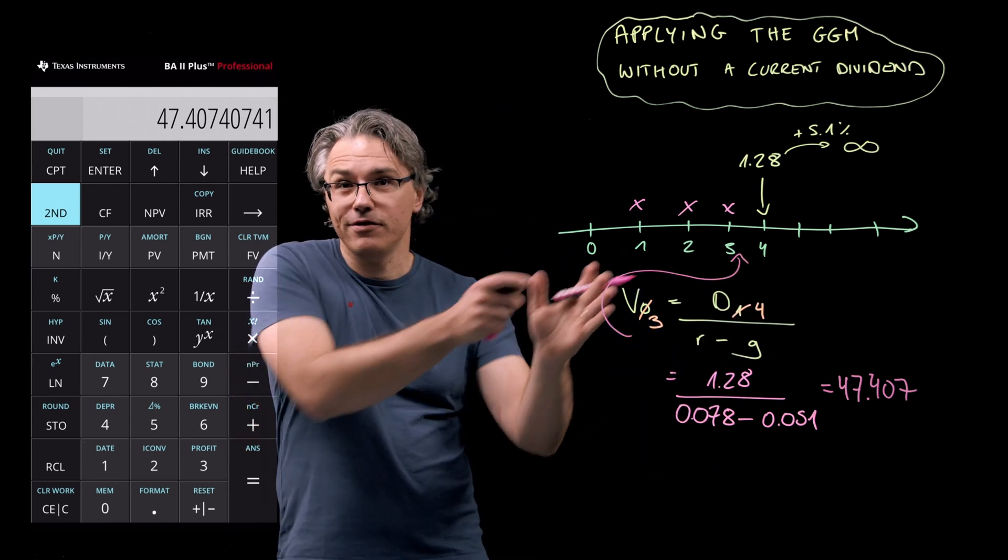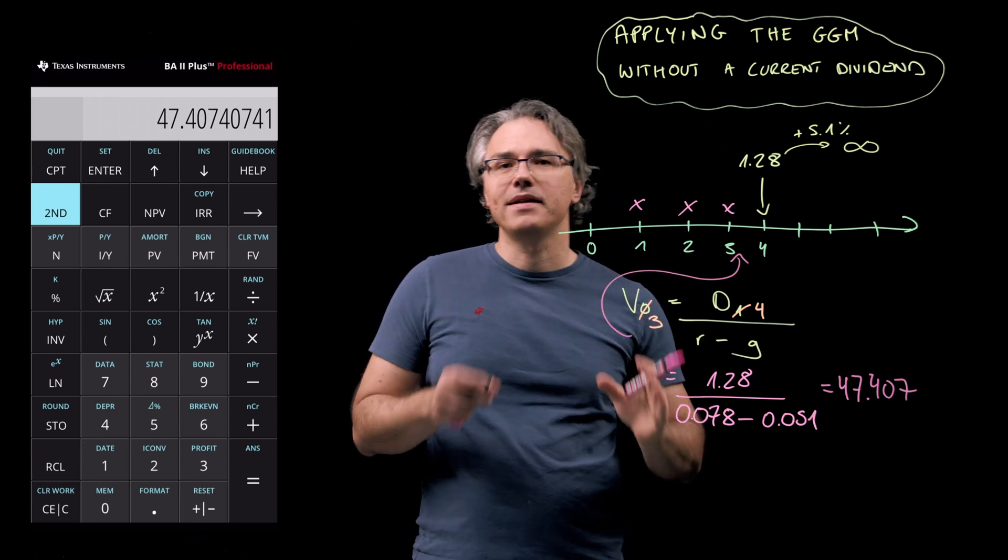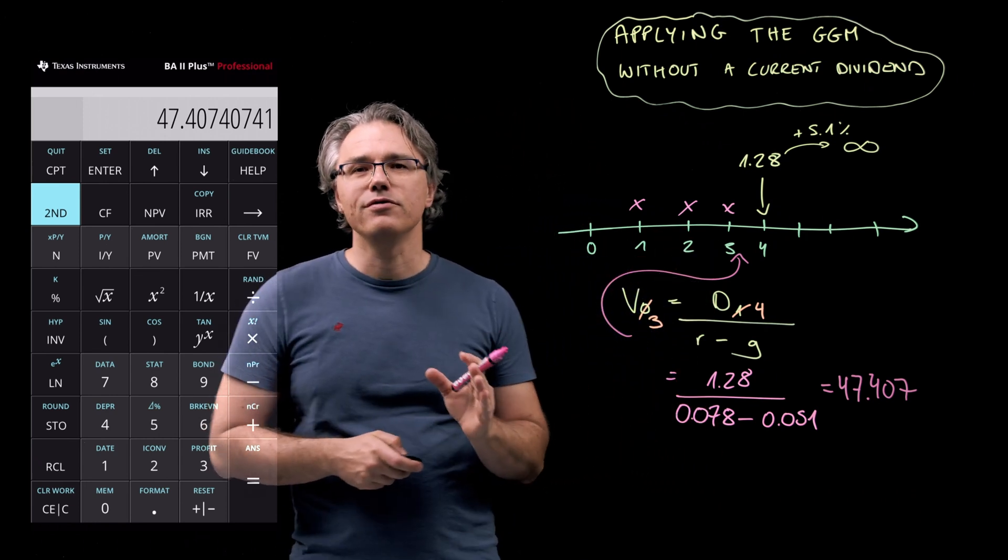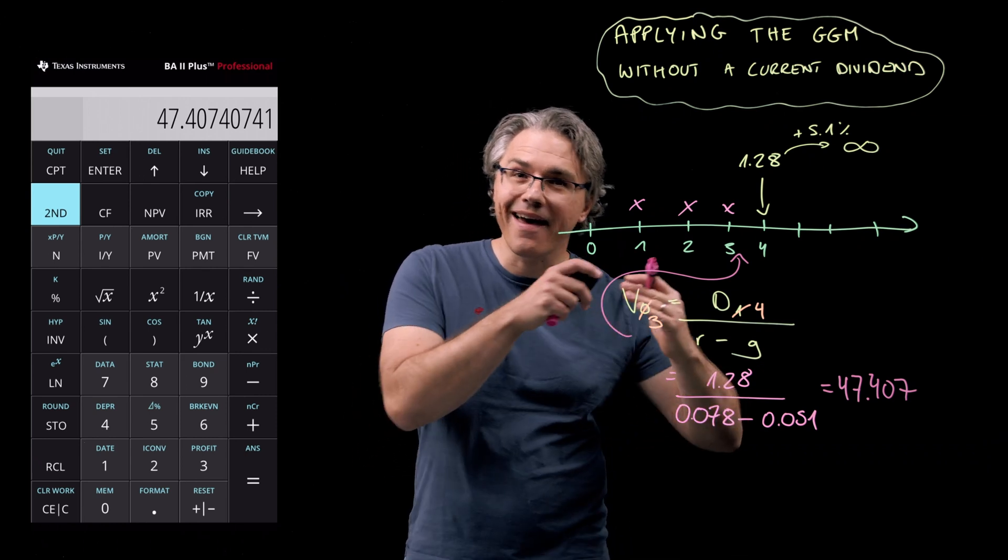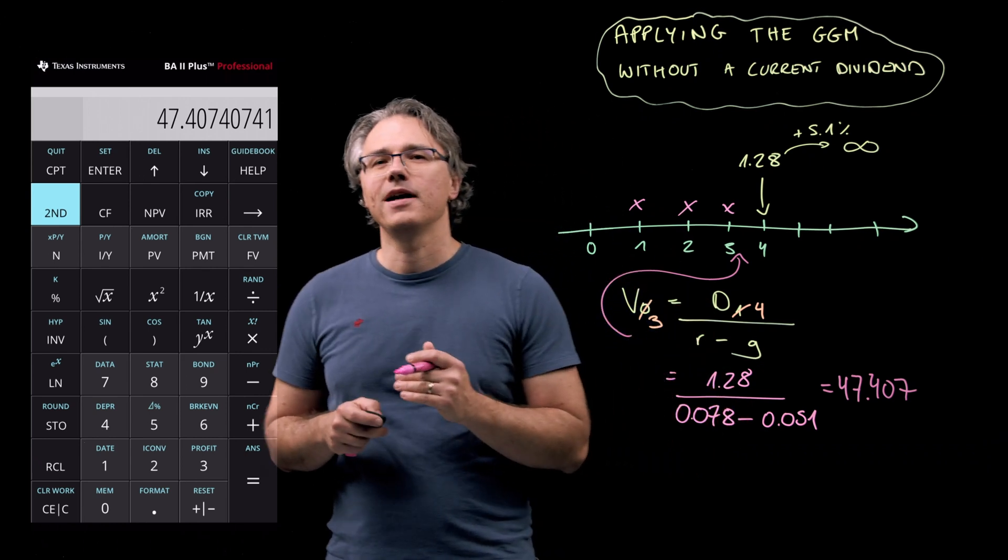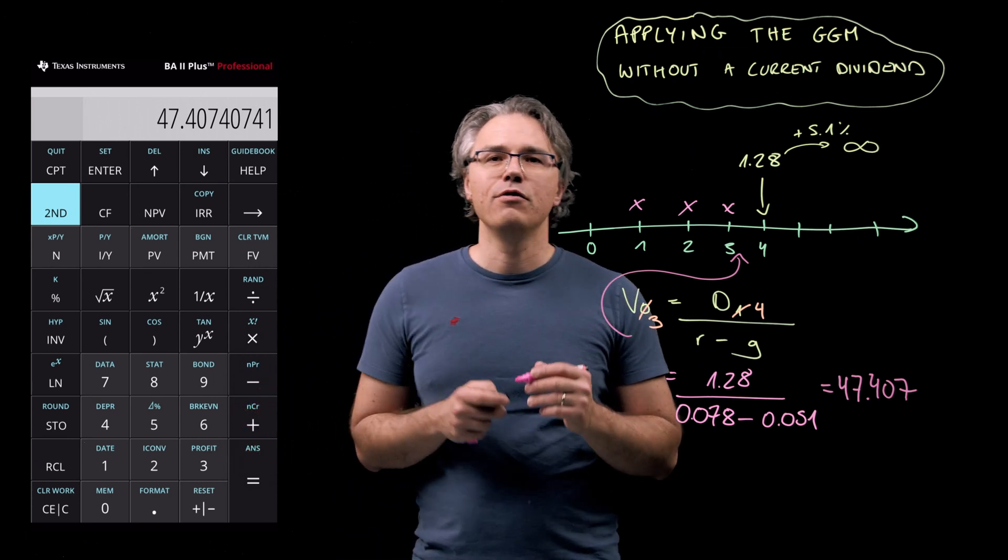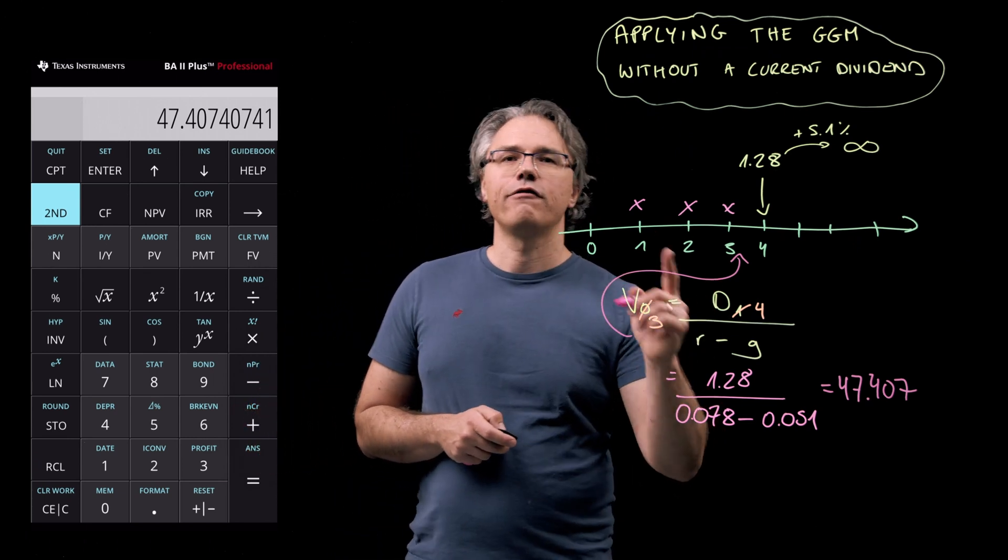Which is over here on the timeline. Always remember that the Gordon growth model produces a value which is one period away or one period ahead of the dividend payment plugged into the numerator of this fraction.